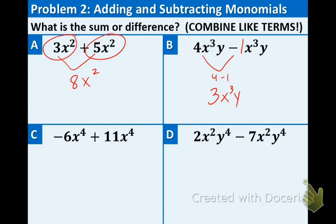In the next one, we have negative 6 and positive 11. Well, negative 6 plus 11, or 11 minus 6 is 5. And then you just rewrite the x to the fourth. So, what we're just doing is looking at the coefficients in front, basically.